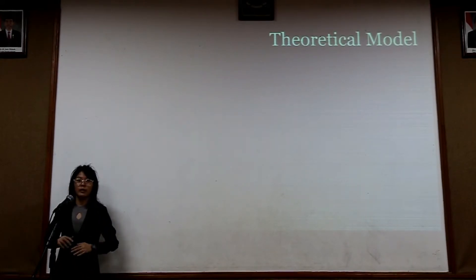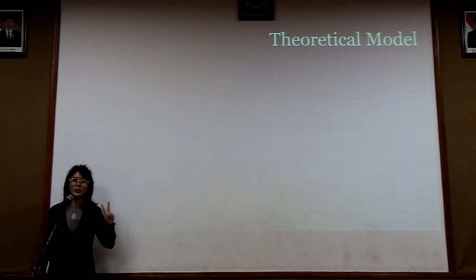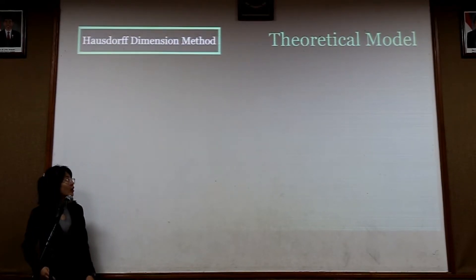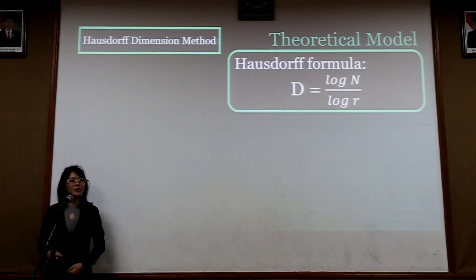Fractal is a repeated pattern of curves or geometric figure, each part of which has the same statistical character as the whole. Fractal has fractional dimension between 1 and 2 or 2 and 3. This research uses the Hausdorff dimension method to do dimension calculation. It is defined as D equals log N per log R.